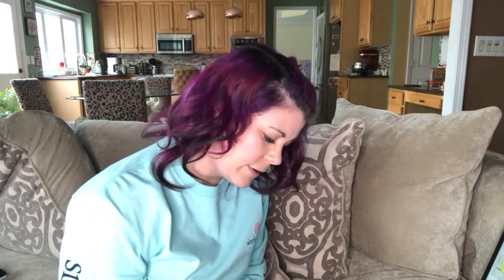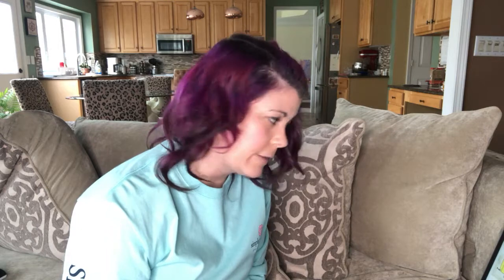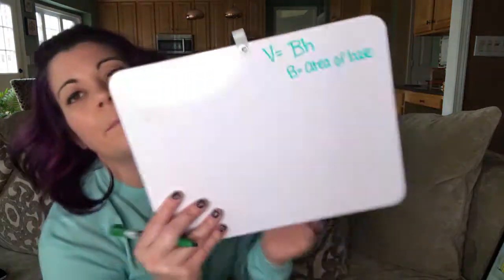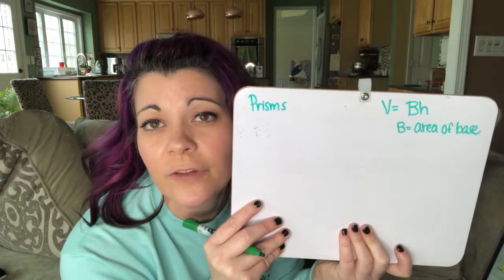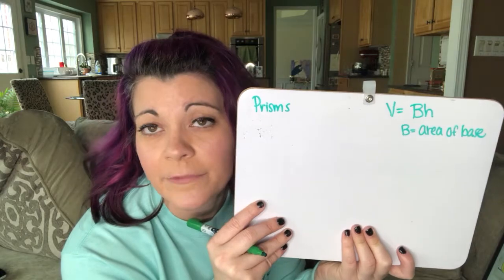The formula for a prism—the volume formula for prisms—is just B, big B, times H, where B, we've seen this before in the surface area, is area of base. So volume is just area of the base times the height.